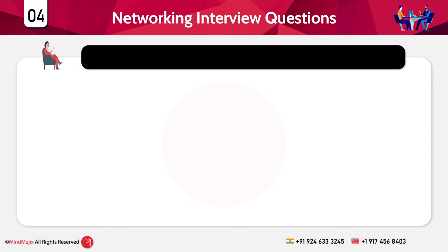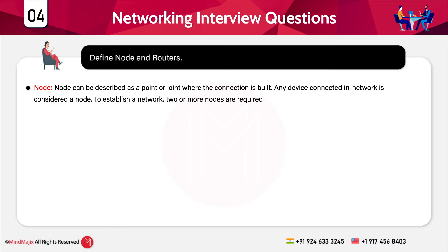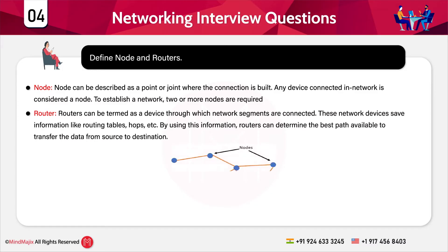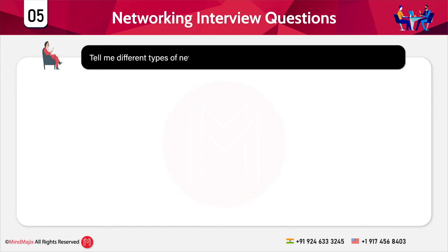The next question is: define node and routers. A node can be described as a point or join where the connection is built — any device connected in a network is considered a node, and two or more nodes are required to establish a network. Routers are devices through which network segments are connected; they save information like routing tables and hops to determine the best path to transfer data from source to destination.